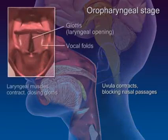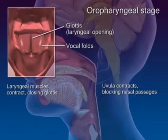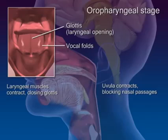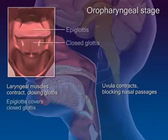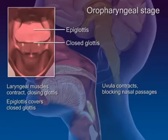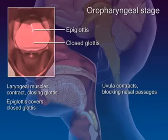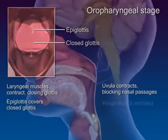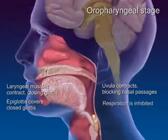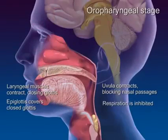The laryngeal muscles contract, closing the glottis at the top of the trachea by tightly aligning the vocal folds. The epiglottis swings down upon the closed glottis. With all airways blocked off, respiration is temporarily inhibited.